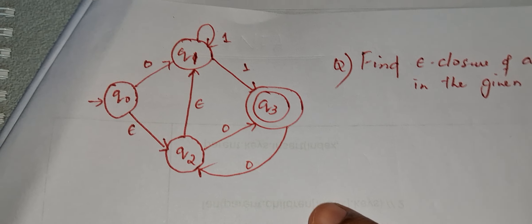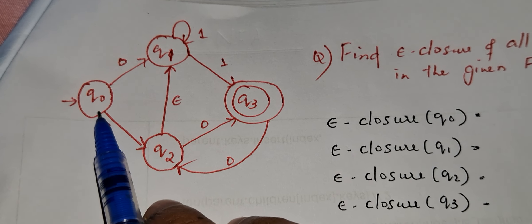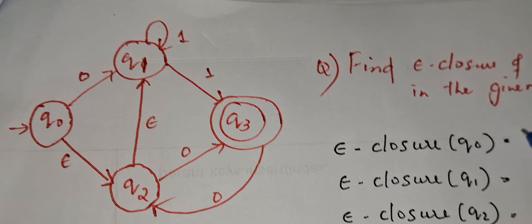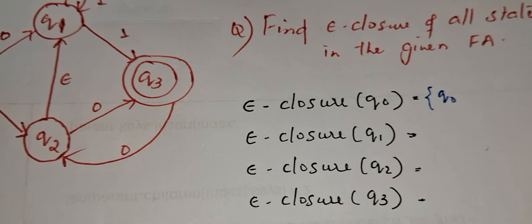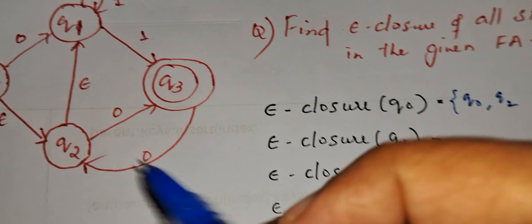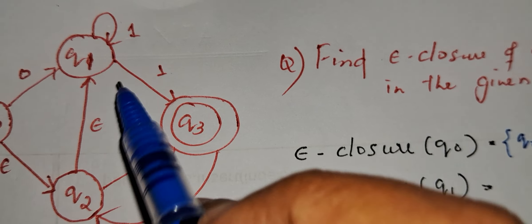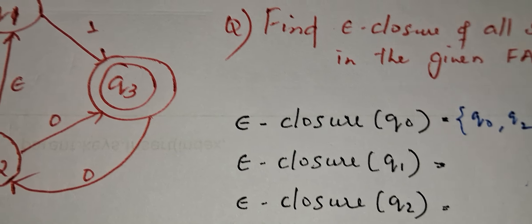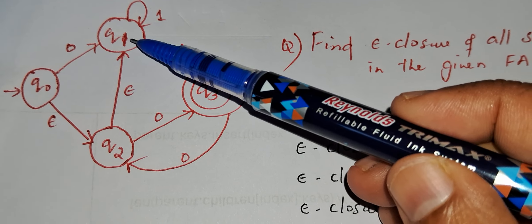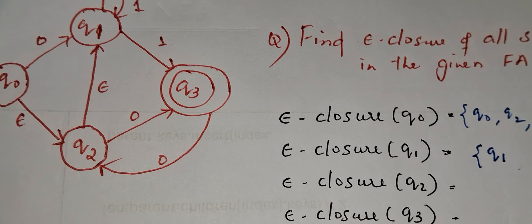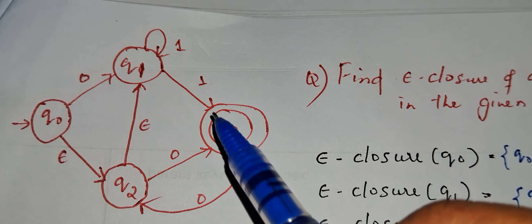Now see another example. Given an automata, find the e-closure of all states. E-closure of q0: q0 itself, then from q0 there is an epsilon transition to q2, so q2 is included; from q2 there is an epsilon transition to q1, so q1 is included; from q1 there is no epsilon movement. So e-closure of q0 is {q0, q2, q1}. For e-closure of q1: q1 itself, and there is no outgoing epsilon edge from q1, so e-closure of q1 is {q1}.